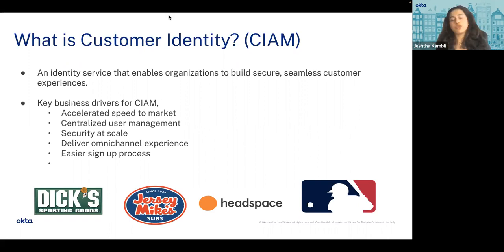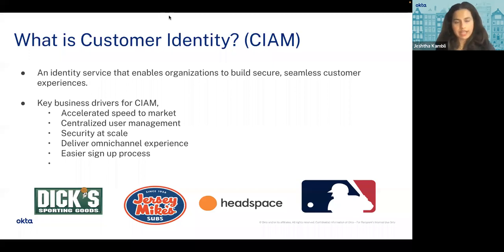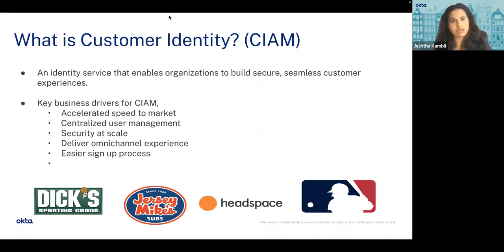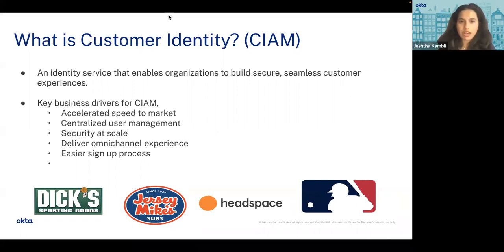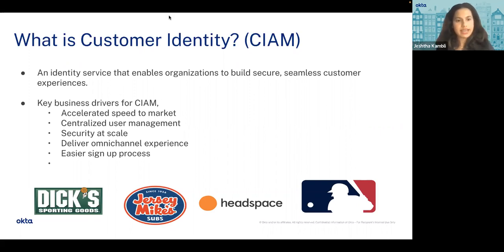The main idea behind CIAM is to have a unified or 360-degree view of your customers. As a user, if there are five services you access from a business, you should only create one profile and access all five services based on your needs. That's centralized user management. For example, with Uber Eats, I had a Google account and a Facebook account, with all my rewards tied to the Google account. It would be great to merge them — if there are duplicate accounts tied to the same email, there should be a feature to link those accounts into a single identity.